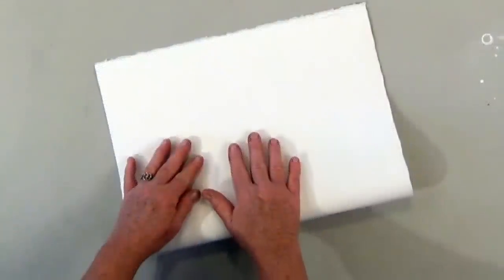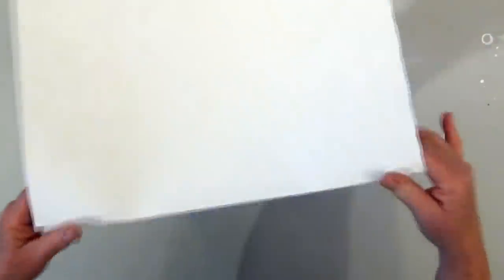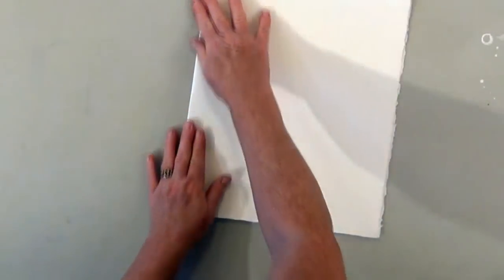Let's see that again. I'm going to fold it, press with my thumbs. This is a really simple way to tear watercolor paper.